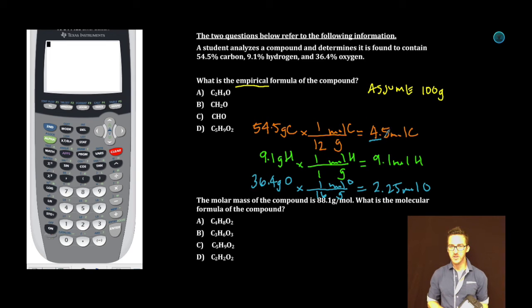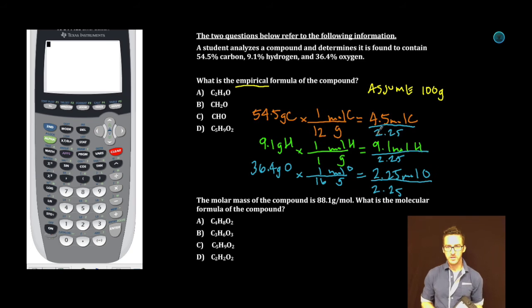We're going to compare by dividing by the smallest amount. When we do that, 2.25 goes into 4.5 two times, 2.25 goes into 9.1 about four times, and 2.25 goes into 2.25 one time. So we've converted to moles and compared the mole amounts to come up with our molar ratio for the elements in the compound. It's going to be C2H4O, answer choice A.